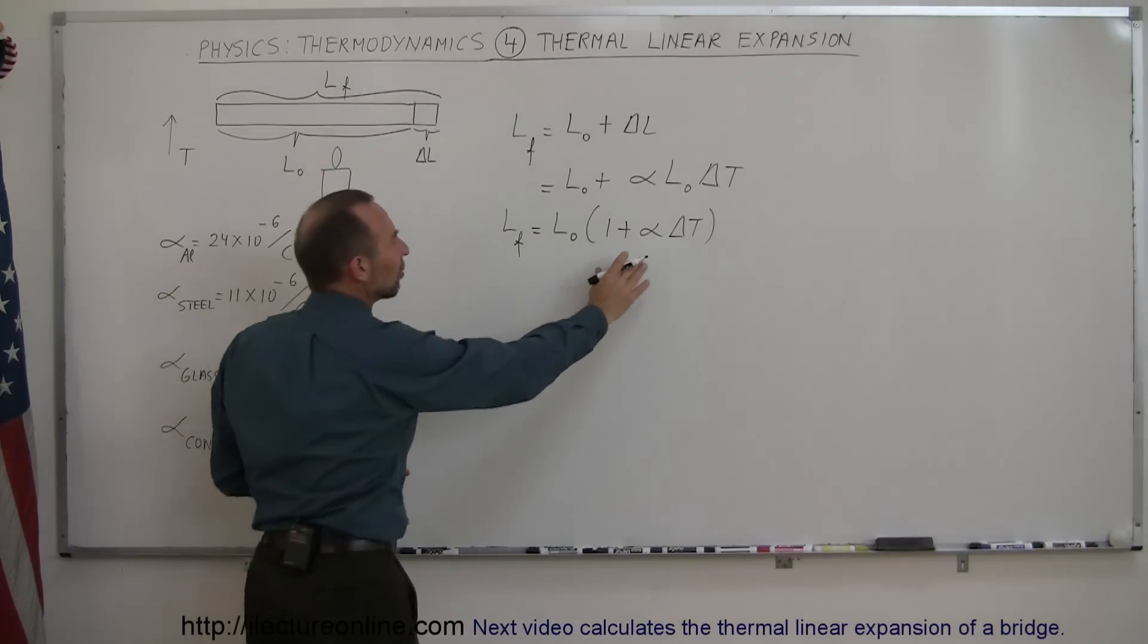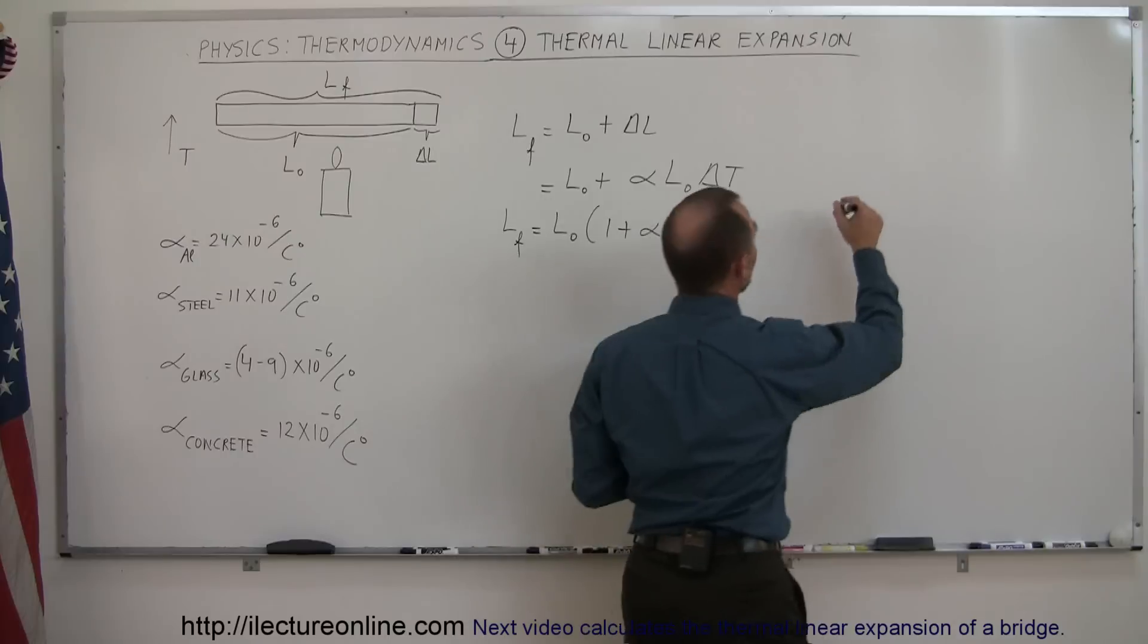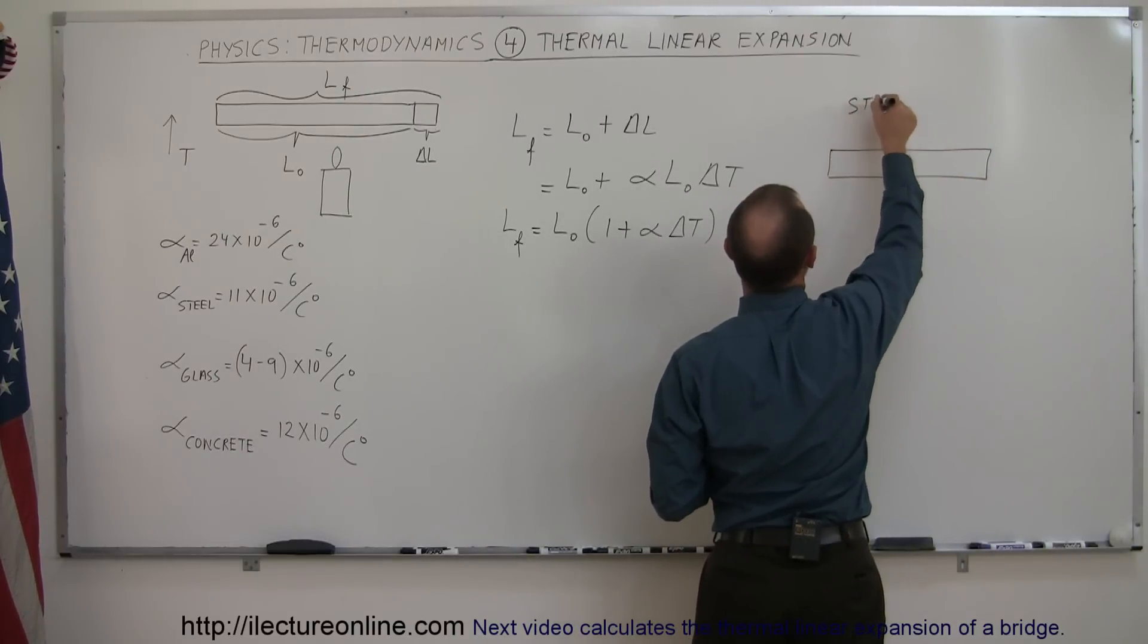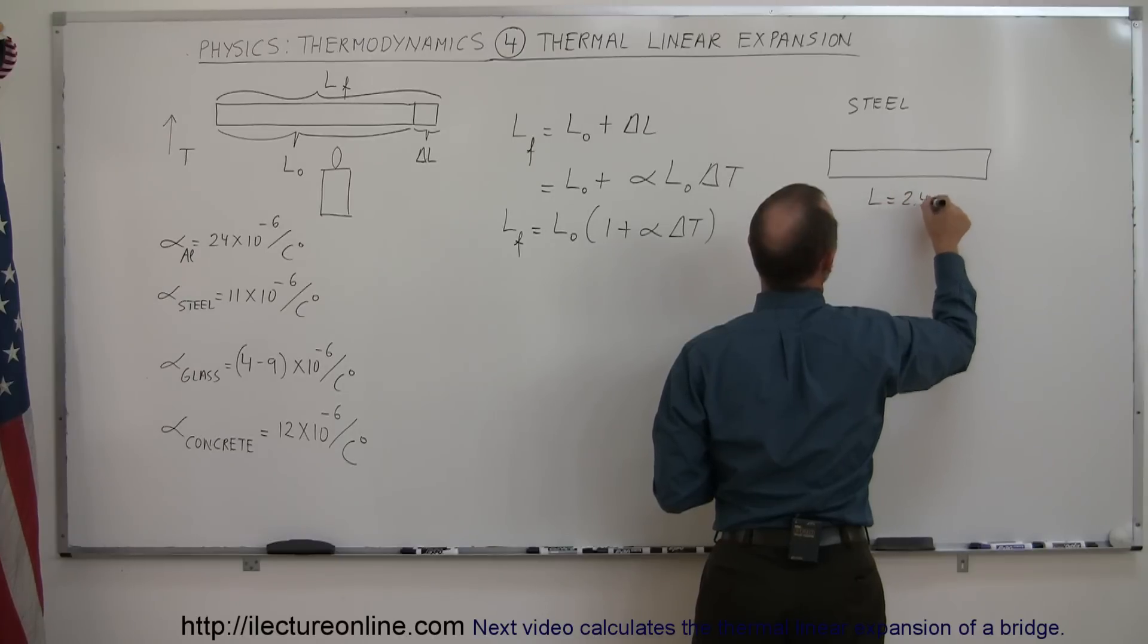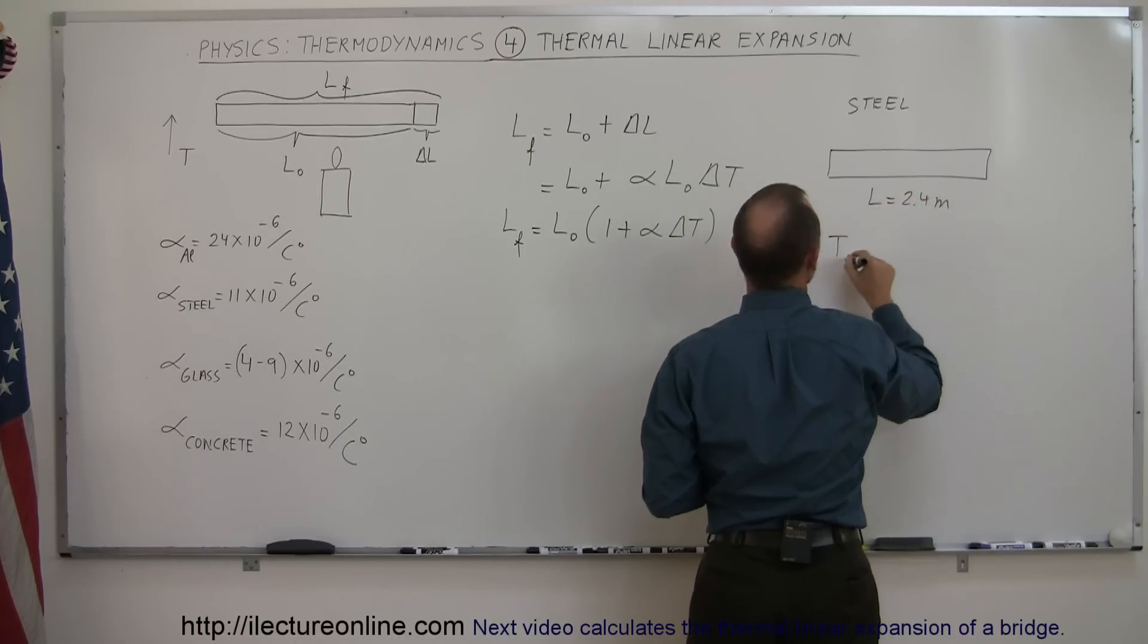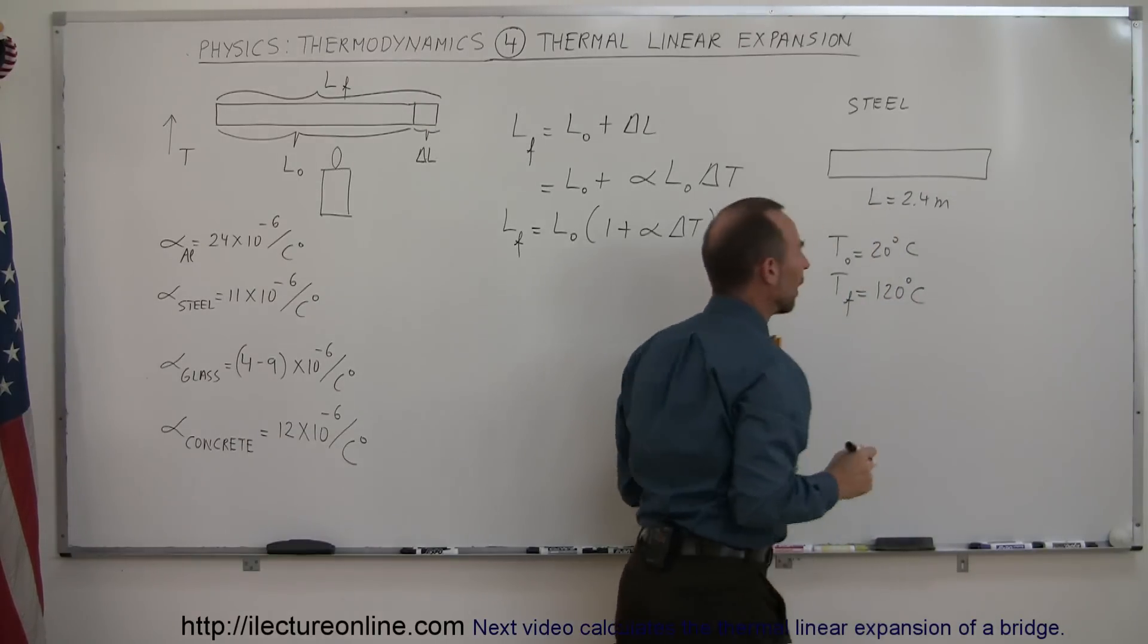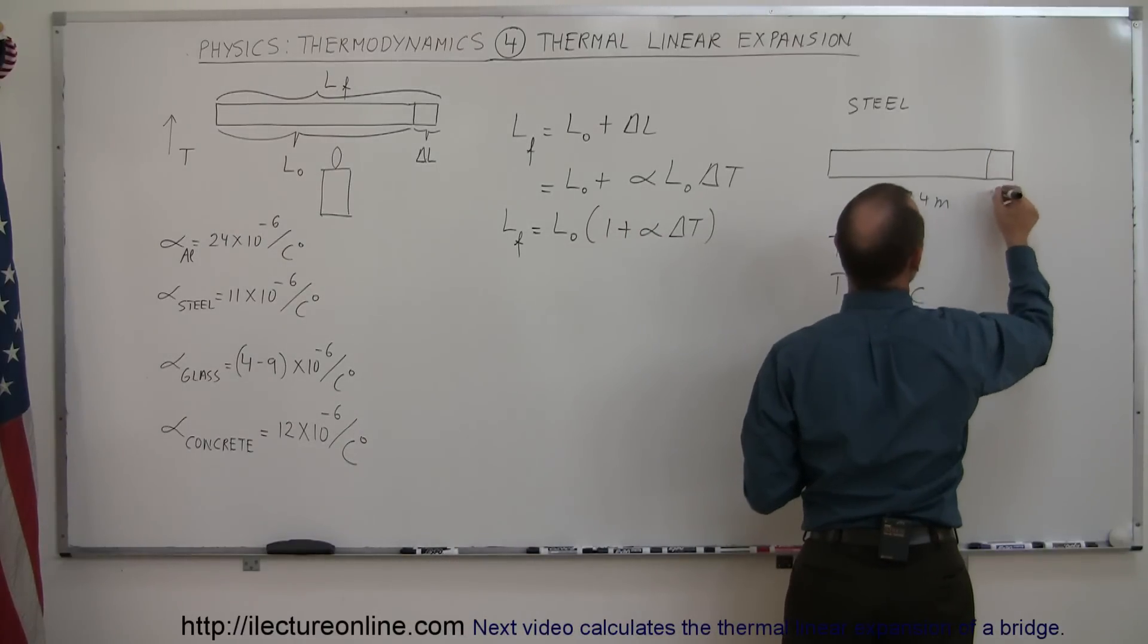So for example, let's say we have an object like this that's made out of steel. So we have a steel object, and let's say that the initial length is equal to 2.4 meters. Let's say the temperature initial is equal to 20 degrees Celsius and temperature final is equal to 120 degrees Celsius. How much longer will this object be? What will be the increase in length? What is the delta L equal to?